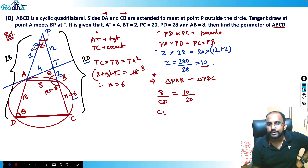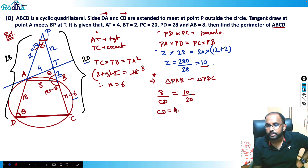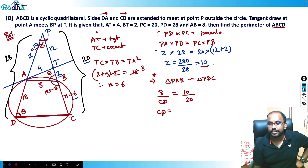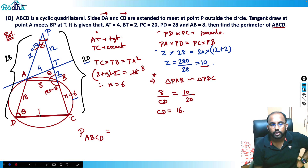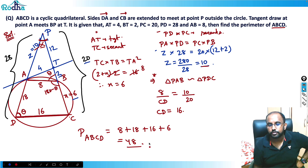So CD = 16. The perimeter of ABCD = AB + BC + CD + AD = 8 + 6 + 16 + 18 = 48. So 48 is the answer.